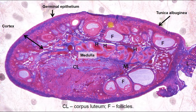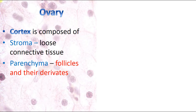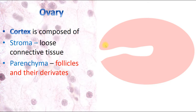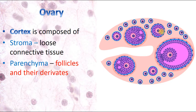The cortex contains follicles on different stages of their development and their derivatives, along with tunica albuginea and germinal epithelium. The cortex of the ovary is composed of two basic components: stroma, which is loose fibrous connective tissue, and parenchyma, which includes follicles and their derivatives. Solid or parenchymal organs — such as ovaries, testes, kidneys, lungs, liver, and pancreas — all have this stroma and parenchyma organization.